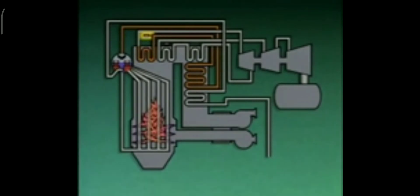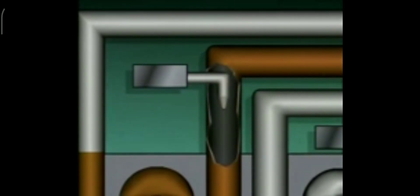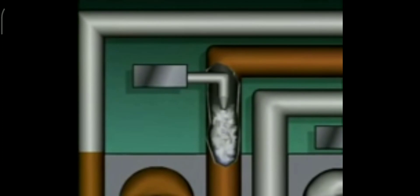This boiler has an attemperator, or desuperheater, located between the primary and secondary superheaters. The desuperheater keeps the steam from becoming so hot that it damages the superheater tubes. If the steam gets too hot, the desuperheater sprays water into the steam flow. This water immediately flashes to steam and mixes with the steam that is already there, resulting in a decrease in the temperature of the superheated steam.